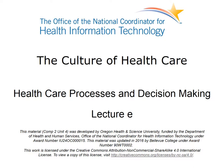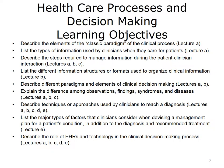It discusses how care is organized in a practice setting, privacy laws, and professional and ethical issues encountered in the workplace. The objectives for health care processes and decision-making are to describe the elements of the classic paradigm of the clinical process, list the types of information used by clinicians when they care for patients, and describe the steps required to manage information during the patient-clinician interaction.